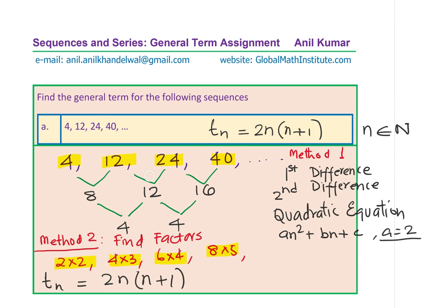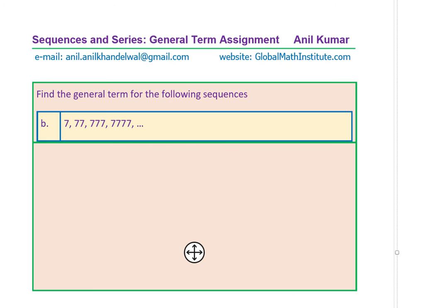The solution for this will be that the general term tn = 2n(n + 1), where n belongs to the set of natural numbers. Do you appreciate that the standard method would have involved a lot of calculations and time? However, understanding how to write it as a factor helps you find a quick solution. That is the approach we are going to follow in all the examples. Now let's look into the second one, which is: find the general term for the sequence b — 7, 77, 777, and so on.